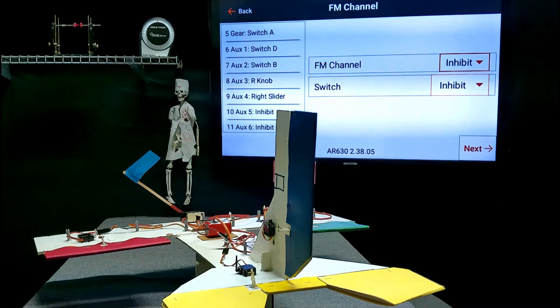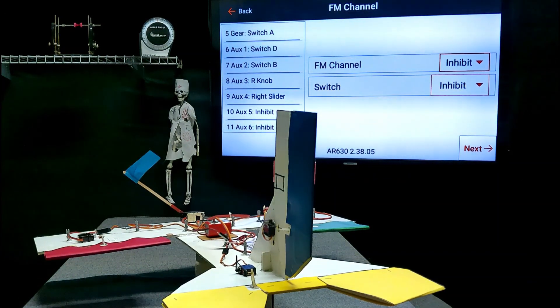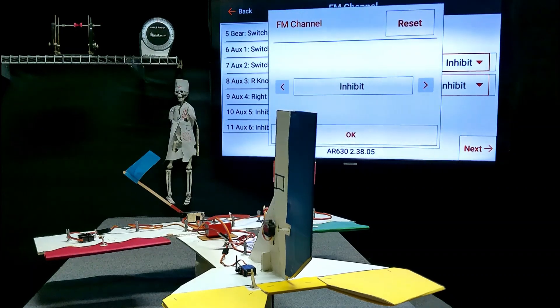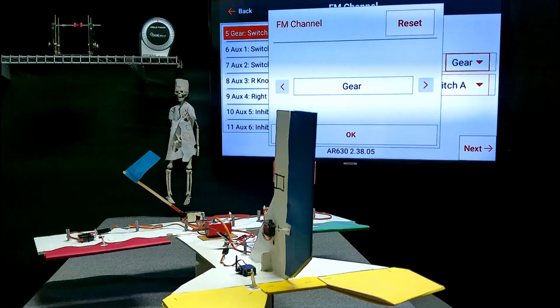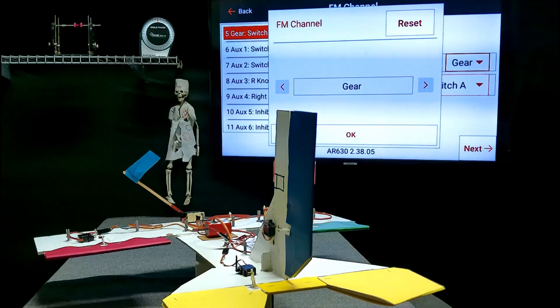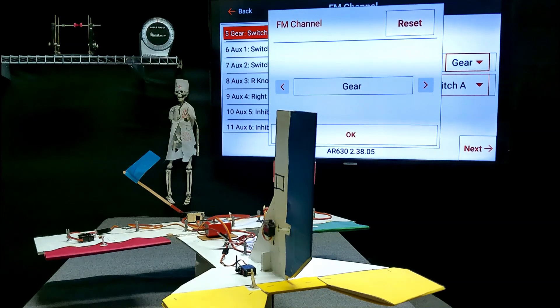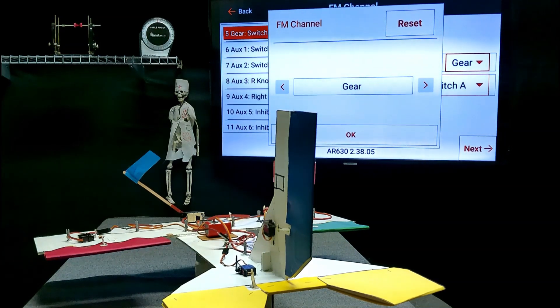So we're going to go to flight mode channel. We're going to take it from inhibit and I'm going to use my gear switch since our plane does not have landing gear. So now, gear is the channel for our flight mode.